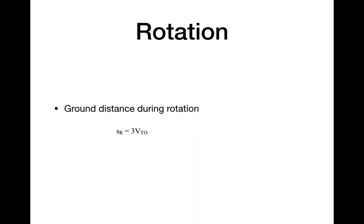In the rotation phase of takeoff, the aircraft angle of attack is increased until the lift coefficient reaches 0.8 times the maximum lift coefficient. This maneuver is assumed to take 3 seconds, during which the aircraft velocity is VTO. The ground distance during rotation is SR = 3 × VTO.